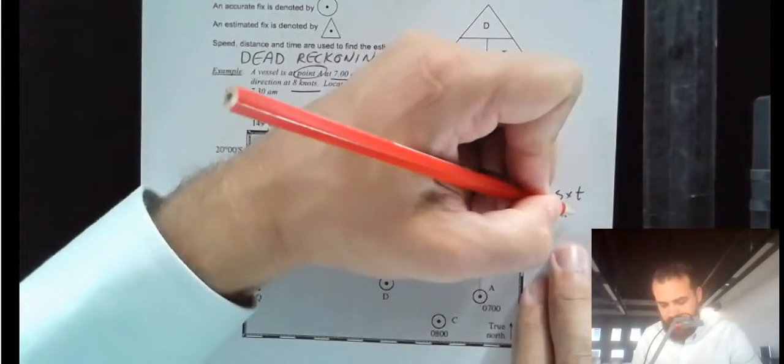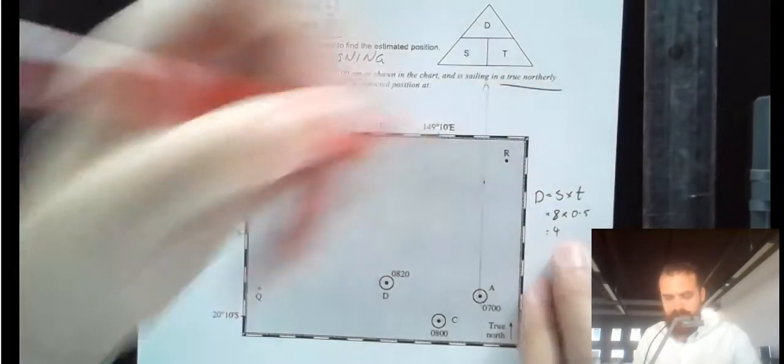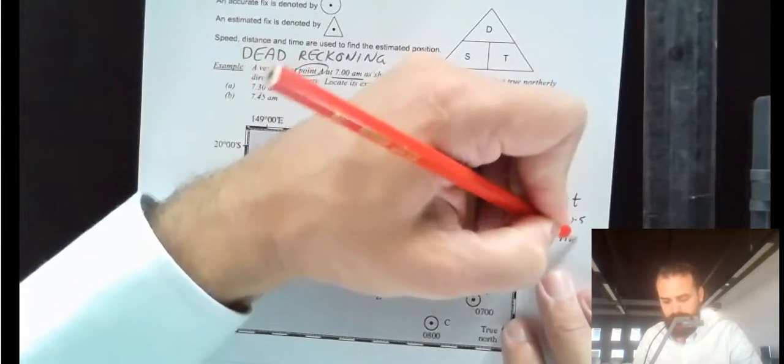So that's 8 times 0.5, half an hour. And that means he's travelled 4 nautical miles. So he's travelled 4 nautical miles in that time.